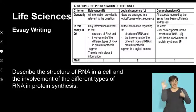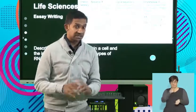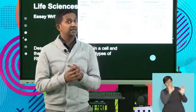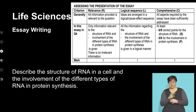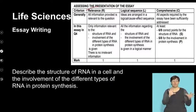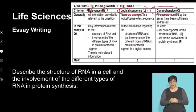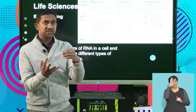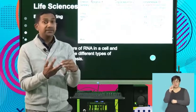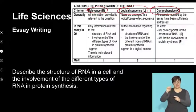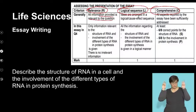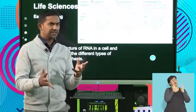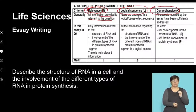These essays are marked very systematically using what we refer to as a rubric. It's important that you understand how this rubric is used, as it will help you think clinically around how to structure your essay. The rubric covers relevance, logical sequencing, and comprehensiveness. Relevance means what you've written is relevant to the aspect - we needed to discuss the types of RNA, the structure of RNA, and the use of different types of RNA in protein synthesis. You cannot fill space in your essay with irrelevant information.